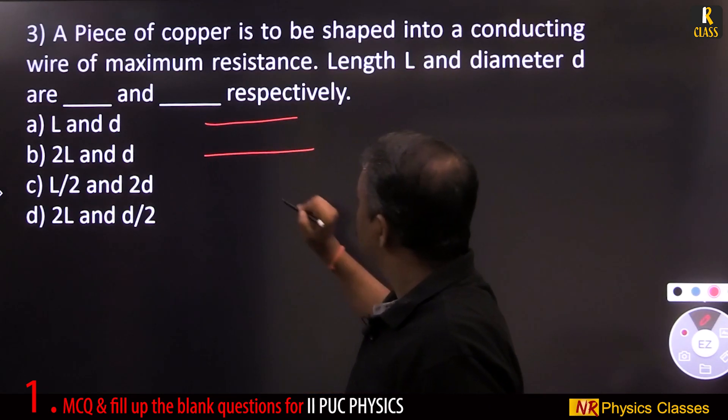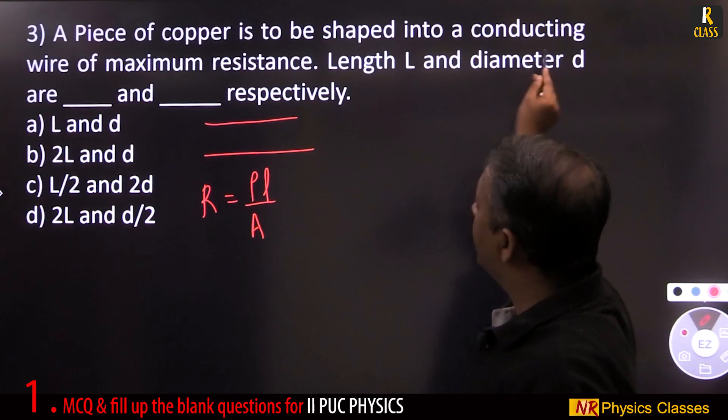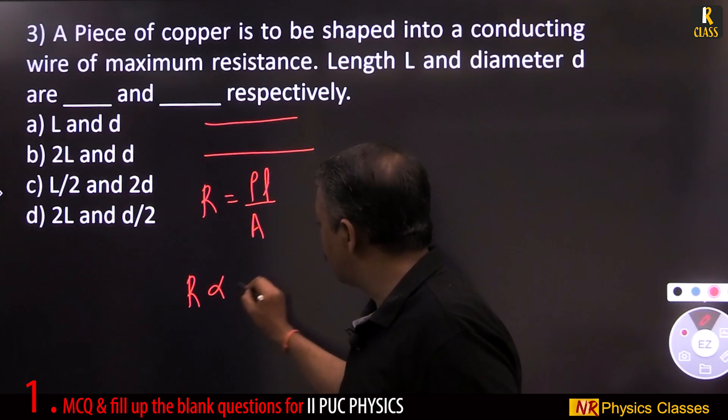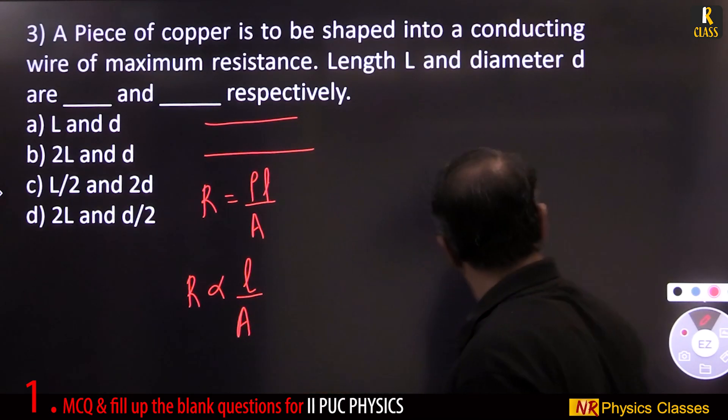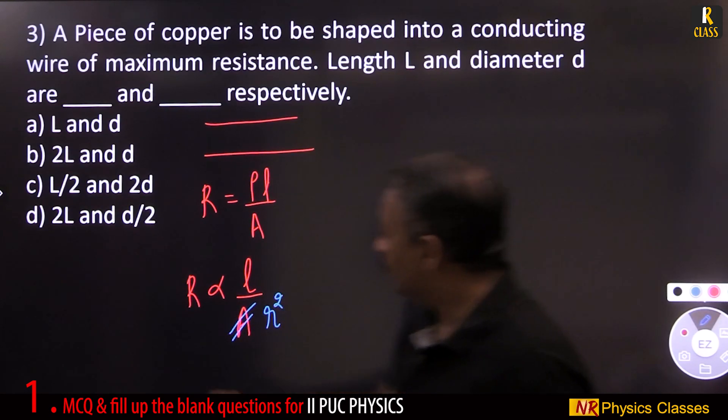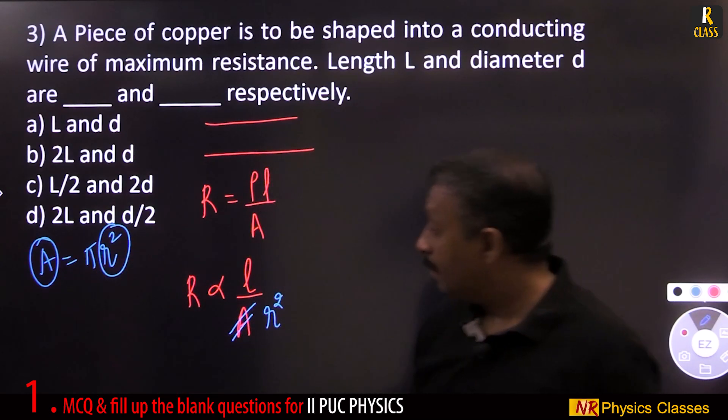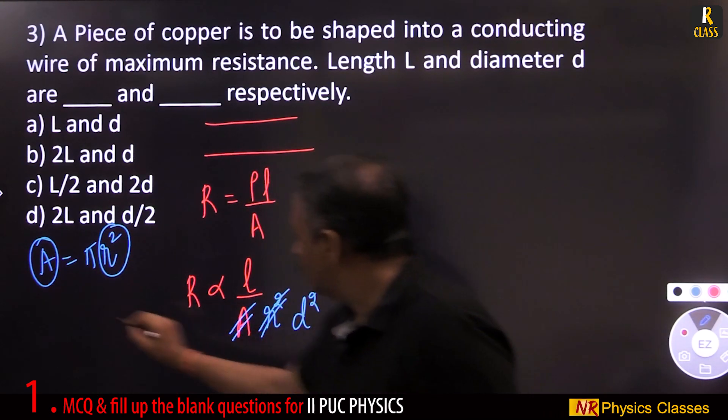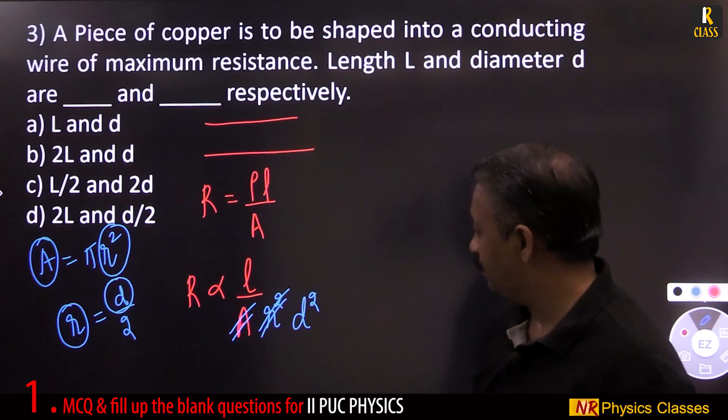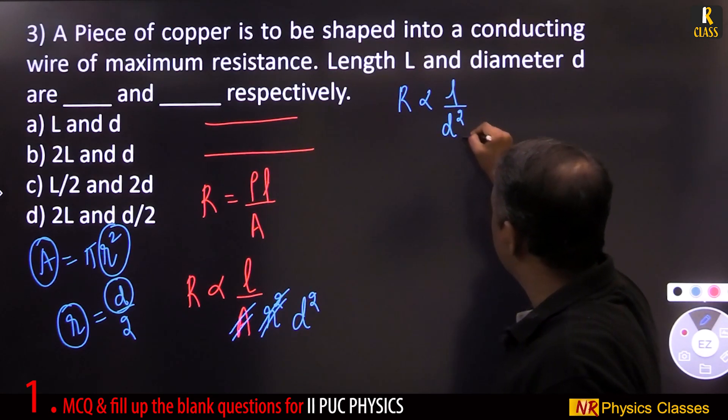A piece of copper is to be shaped into a conducting wire of maximum resistance. Wire resistance is given by rho L by A. Length and diameter: L is length, A is area. So resistance is directly proportional to length, inversely proportional to area of cross section. Area is directly proportional to square of the radius because area equal to pi r square.